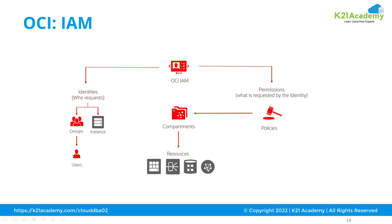So let's assume you have a group of network administrators. You put all your network resources into a compartment — the network compartment — and give administrative privileges to the network group on that compartment. Similarly, all databases are clubbed together into a DBA compartment, and you give all your database administrators manage access on this DBA compartment. This means users who are part of the network compartment will not be able to delete or create databases. Similarly, members of the DBA group will not be able to create or manage network resources, but they will be able to use them.